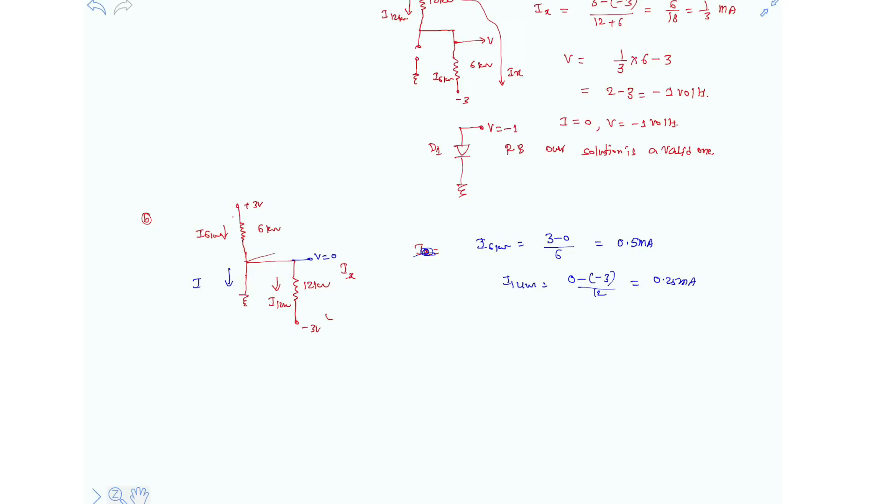So I must be I6kΩ resistor minus I12kΩ resistor, which is 0.5 minus 0.25mA. So it is 0.25mA.